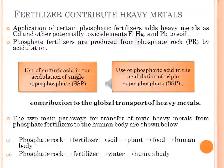Phosphate fertilizers are produced from phosphate rock by acidulation. In acidulation of single superphosphate, sulfuric acid is used, while in acidulation of triple superphosphate, phosphoric acid is used. The final products contain all of the heavy metals present as constituents in the phosphate rock. Commercial inorganic fertilizers, particularly phosphate fertilizers, can potentially contribute to the global transport of heavy metals and may leach into groundwater and contaminate it.